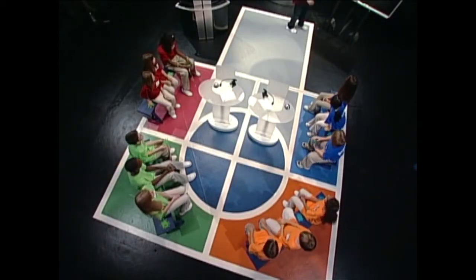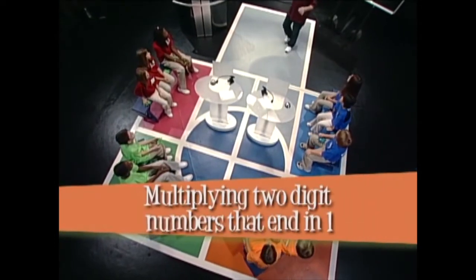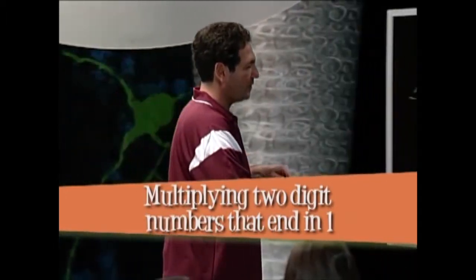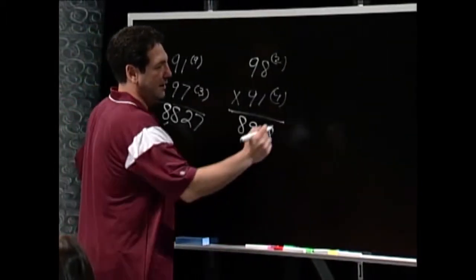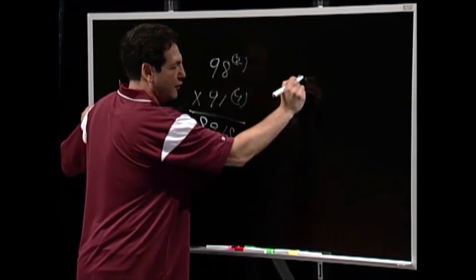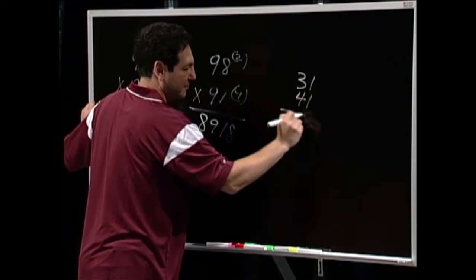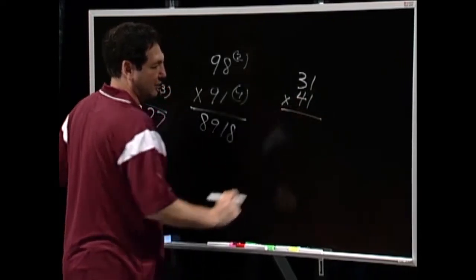Next thing I'm going to teach you guys how to do is multiply two two-digit numbers that end in one. Okay, here we go. Say we have a number like 31 times 41. Okay, this is how it's going to work.